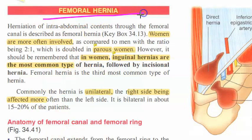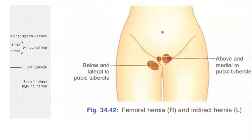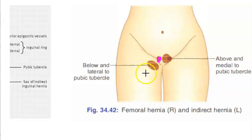In this video, let's look at femoral hernia. Femoral hernia is one of the types of hernia. Looking at this image, a femoral hernia is lateral and below the pubic tubercle.